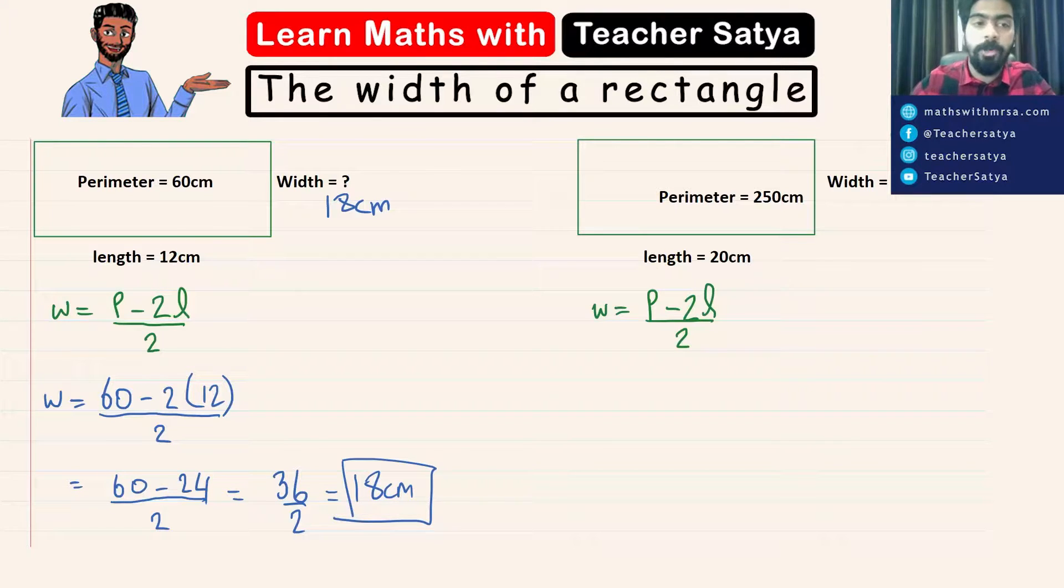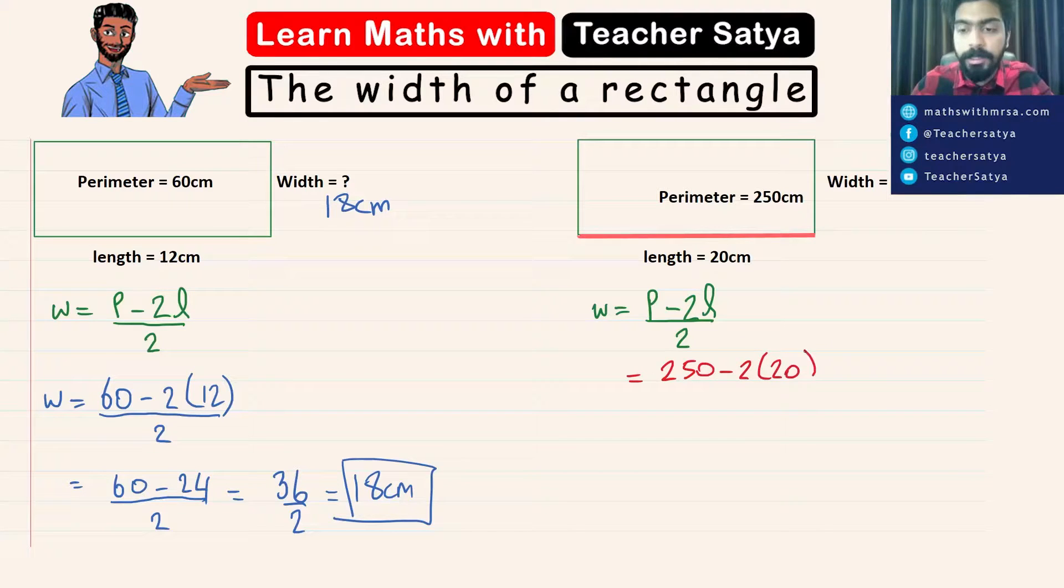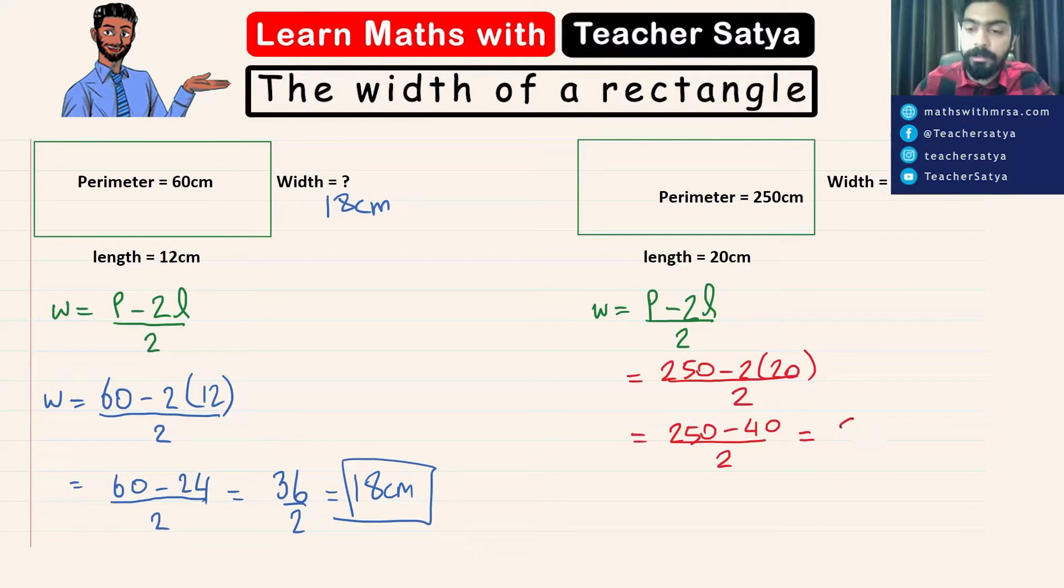In this case, we have the perimeter as 250 minus 2 times length, so 2 times 20 divided by 2. We would have 250 minus 40 divided by 2. 250 minus 40 is 210 divided by 2, which is equal to 105 centimeter.